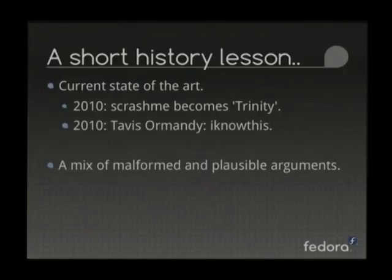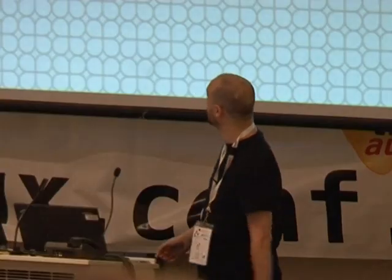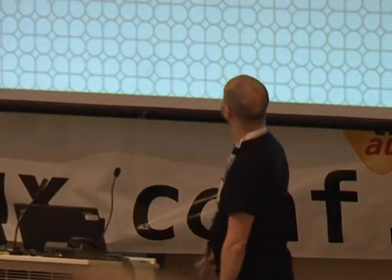Coming up to modern day: in 2010, I extended the tool to understand a lot more parameters and types that the kernel was expecting. Completely parallel to me and unknown at the time, someone at Google was writing pretty much exactly the same tool — called iKnowThis — which does pretty much the same thing in slightly different ways. Sometimes they find different bugs, so it's neat to have two tools doing the same thing to increase coverage. We've both stolen some ideas from each other, which is pretty neat.